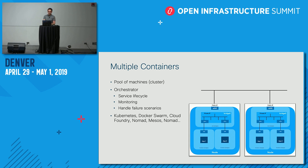Let's add another node — now you have two virtual machines running containers for your application. In this picture, the interconnection is just a big Layer 2 domain. Most experienced network designers would recommend against big Layer 2 domains, but let's assume that's how we interconnect these two nodes. Because you'll have a large number of containers, you'll want to rely on something that helps manage them — not only the containers themselves, but also service lifecycle, visibility, monitoring, and failure scenarios.